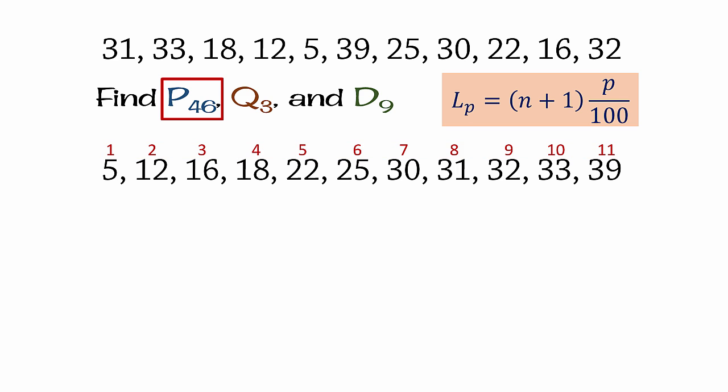For P46, the locator L46 is 11 plus 1 times 46 divided by 100, which equals 12 times 0.46, and that gives 5.52. This 5.52 tells us that the 46th percentile is somewhere between the 5th and 6th observation, that is between 22 and 25.